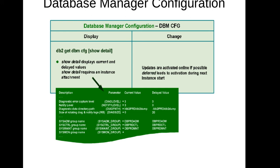When we talk about parameters, there are parameters which are online and which are offline. When a parameter is online, if we try to update it on a live database the changes will be reflected immediately — the propagation of the parameter change is immediate. When a parameter is offline, you have to restart your database or the instance for the parameter change to take effect.